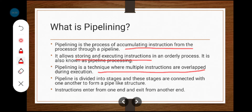In the pipelining structure, the whole circuit is divided into multiple stages. These stages are connected with one another to form a pipe-like structure. The first stage output is given to the next stage input, the second stage output is given to the third stage input, and likewise this structure continues.